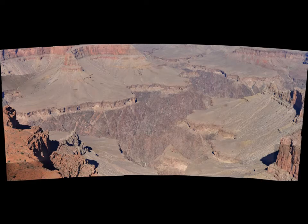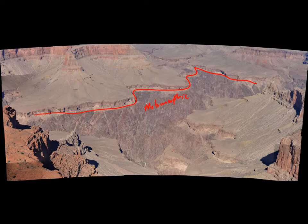Down at the bottom of the canyon, there is this rock type here — this brown, sort of black, slightly purplish stuff. It's a metamorphic rock. All the stuff below this line I'm drawing here is either metamorphic or some is igneous too. There are a number of different rock types, but they're all about the same age and similar properties, so they're very commonly called the Vishnu Schist. This is a schist, a highly foliated metamorphic rock.